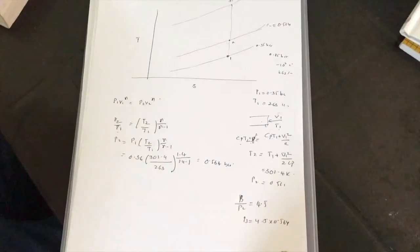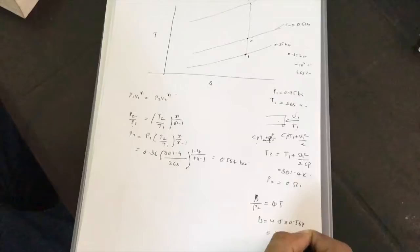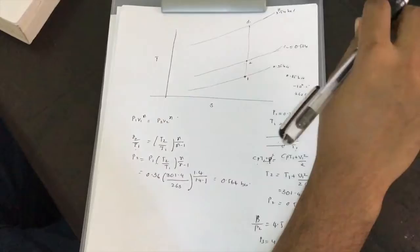P3 = 4.5 × P2 = 4.5 × 0.564 = 2.54 bar. So we have obtained P3 = 2.54 bar.